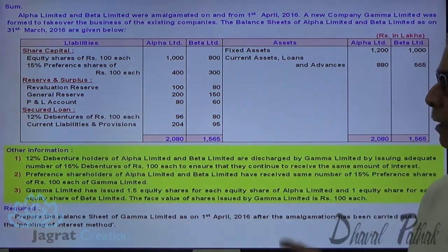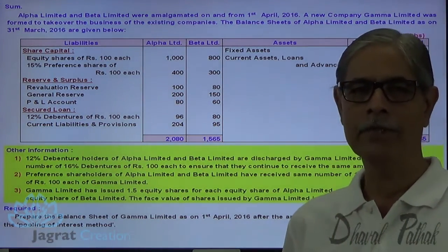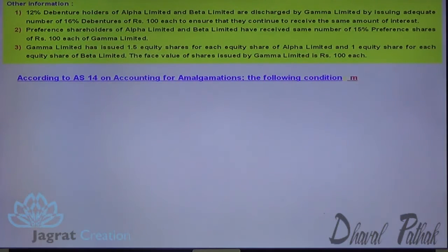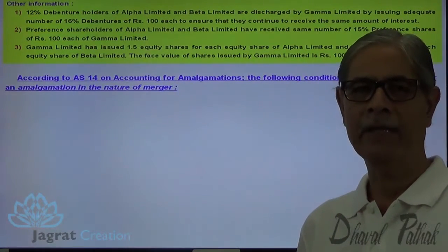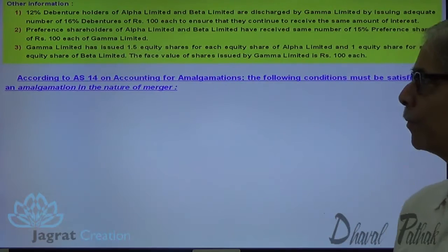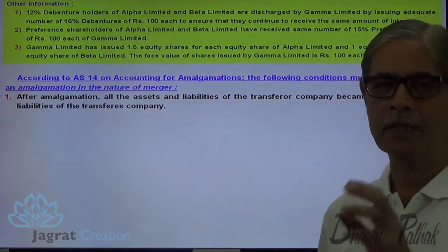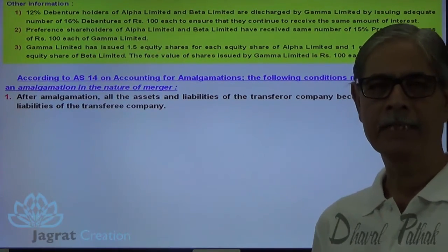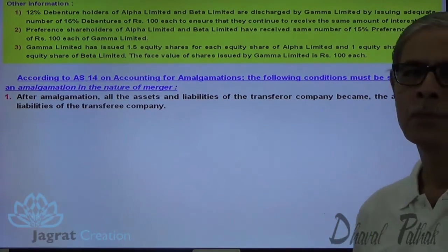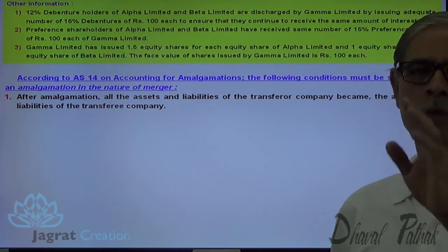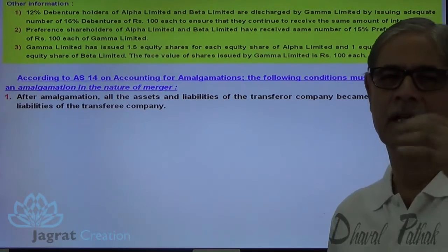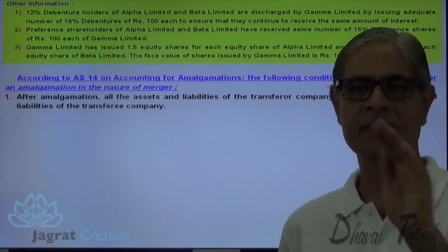These are the various peculiarities which lead us to account for amalgamation in the nature of merger. Let me consider these conditions in a bit more detail. The following are the conditions required for accounting of amalgamation by merger or pooling of interest. First, all the assets and liabilities of the transferor company must be taken over by the purchasing company — not only assets, not select liabilities, but all assets and liabilities.